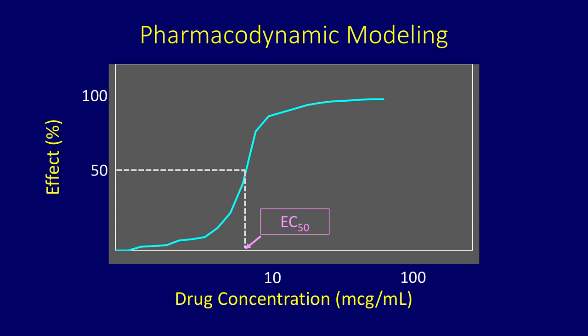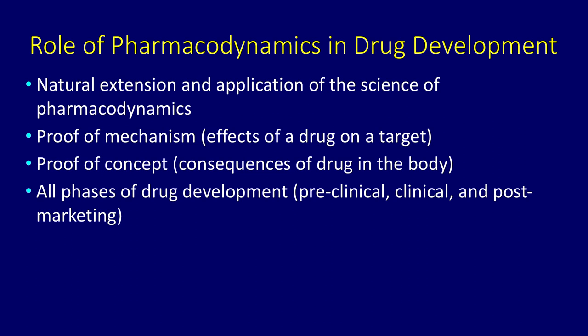What is the role of pharmacodynamics in drug development? Drug development is a natural extension of pharmacodynamics. The first step is proof of mechanism — the effects of a drug on a given drug target. The second step is proof of concept — the consequences of the drug in the body. All phases of drug development use pharmacodynamics, from preclinical to clinical to post-marketing.